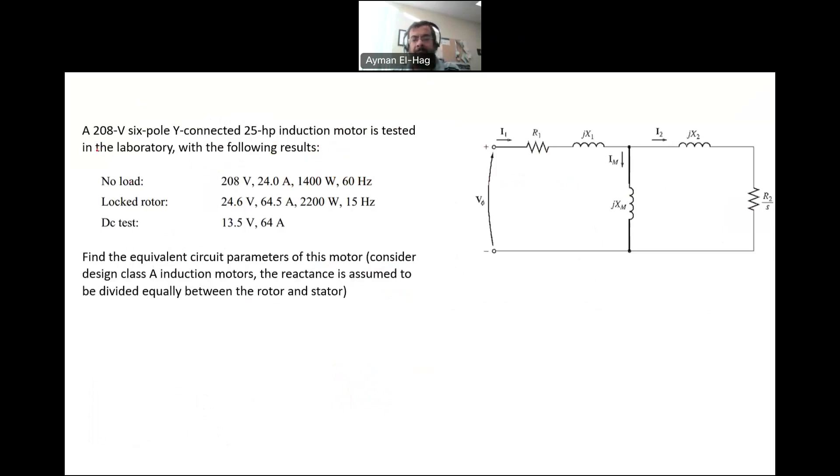Let's have our example. A 208 volt, this is the rated input line-to-line voltage, 6-pole, Y-connected, 25 horsepower motor. This is the output power of the induction motor.